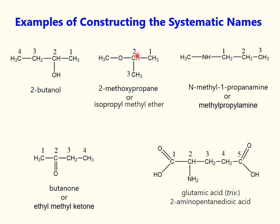The main chain in the ether is a 3-carbon chain of propane. This group is called methoxy and may be used only as a prefix. Together, this gives the name 2-methoxypropane — another name given by radical functional nomenclature.